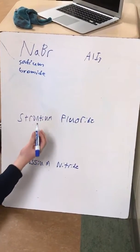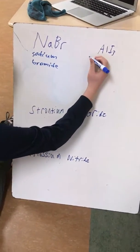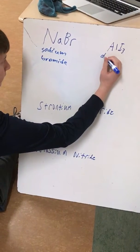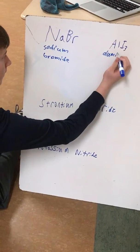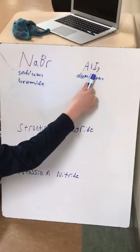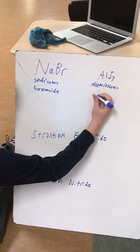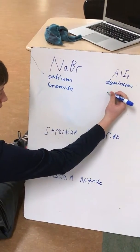Next one, we have aluminum first, so that would just be the same. Then we have iodine, and it doesn't matter the subscript here - we just still do the same thing we did last time. So instead of iodine it would be iodide.